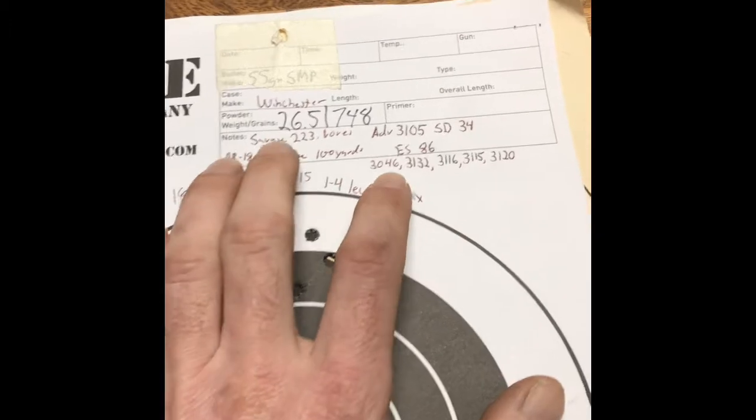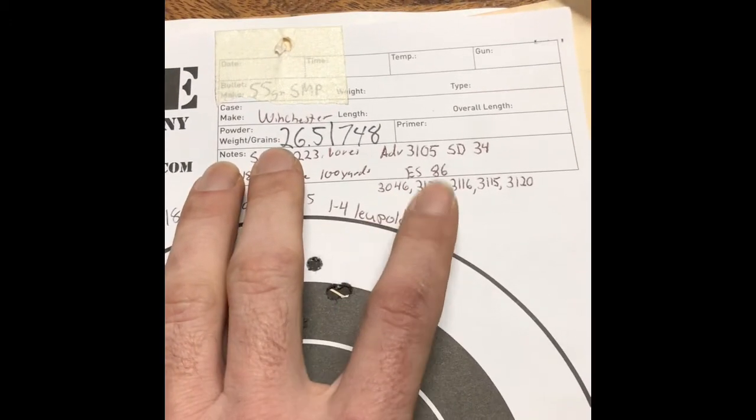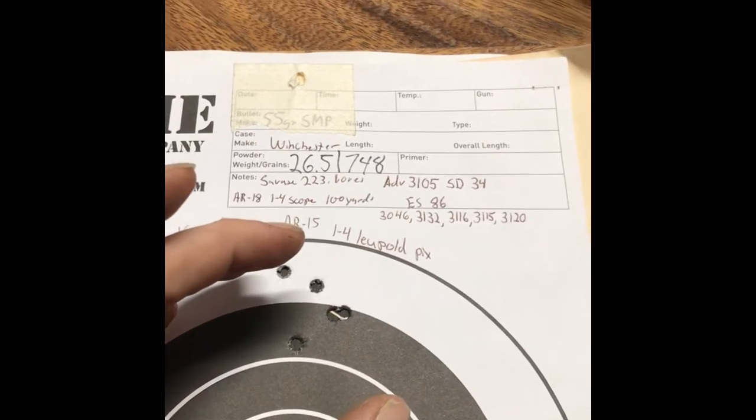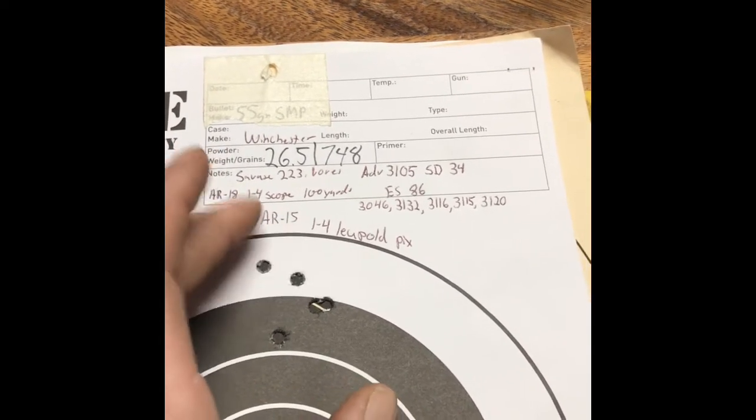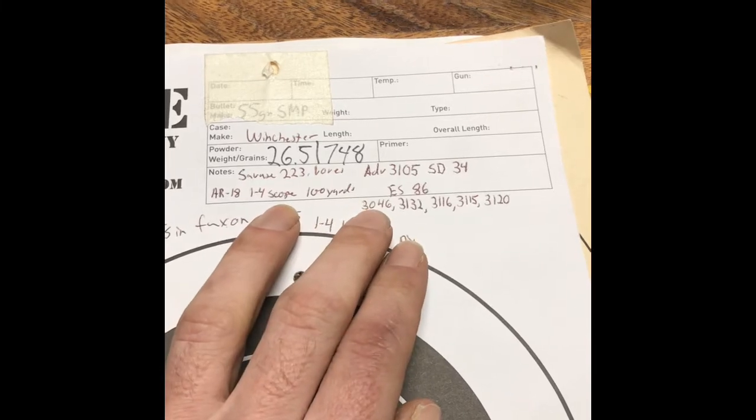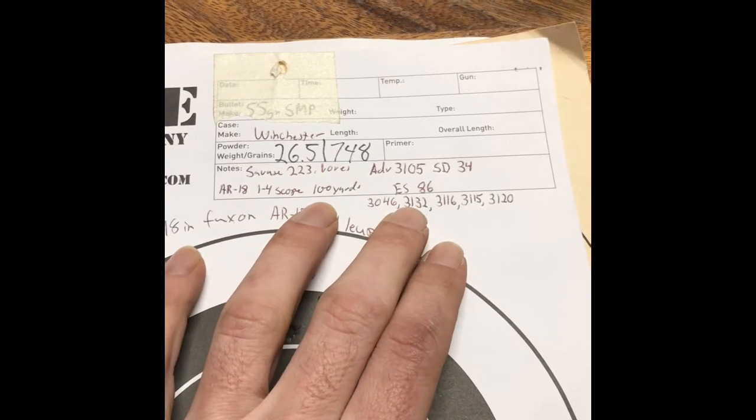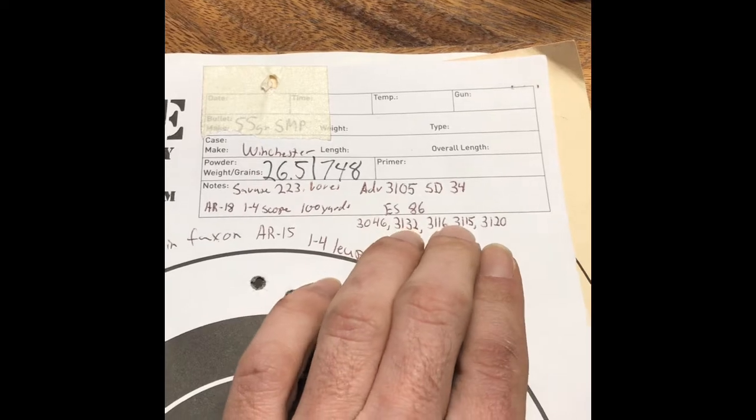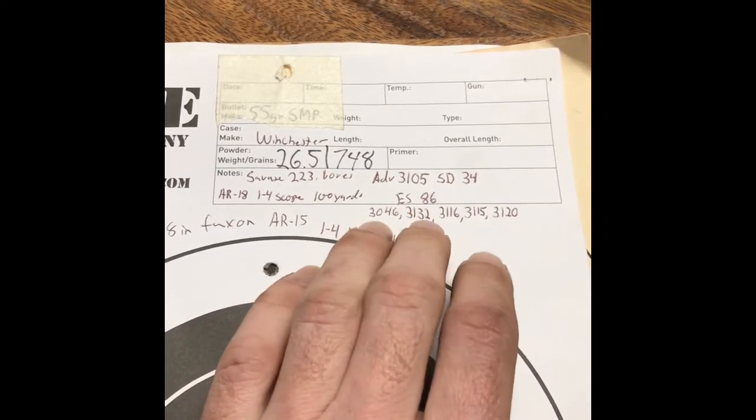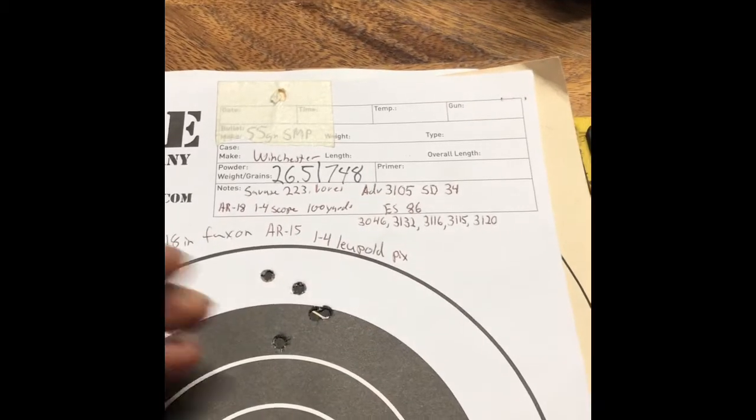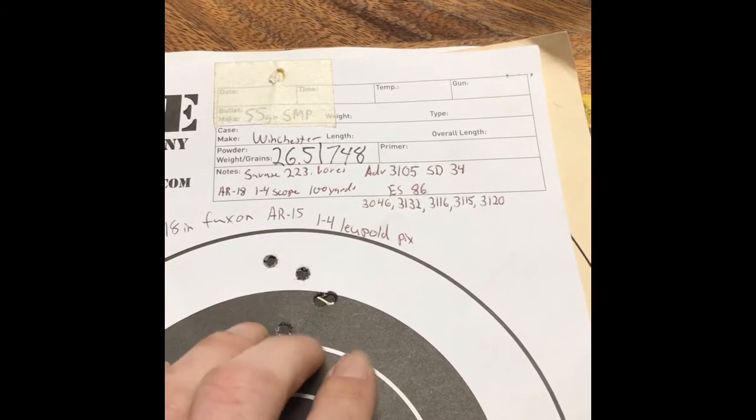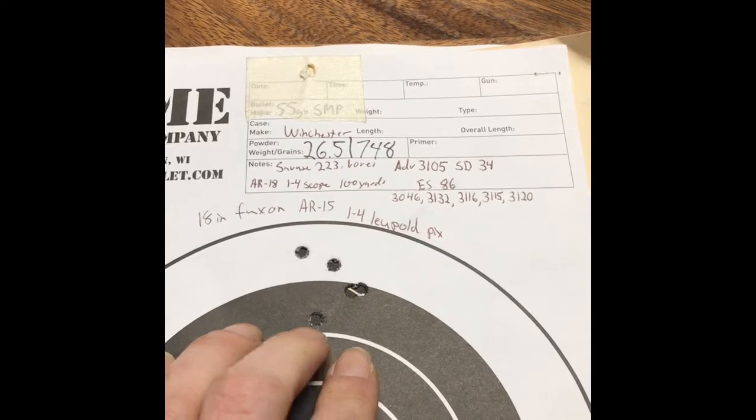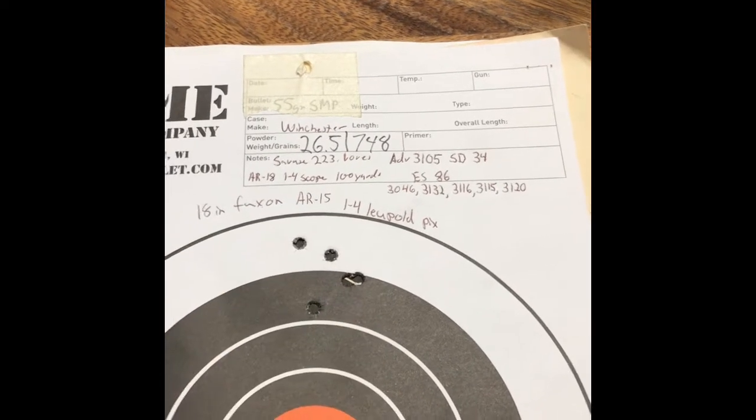That's what it did with the beam scale. It was an extreme spread of 86, standard deviation of 34. So it was not really the best for accuracy out of that AR platform with an 18 inch barrel. It was very close with that 3132 for being the high, and 3116, 3115, and then 3120. I was very happy with them three. But the 3046 and the 3132 threw those kind of out the window.